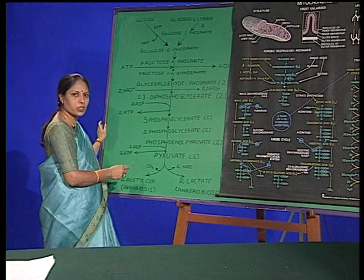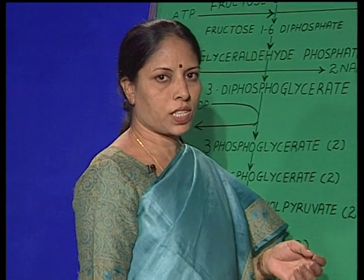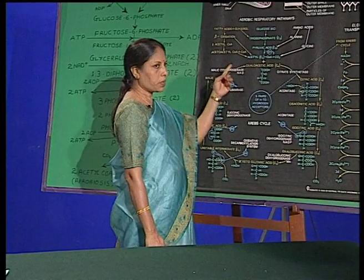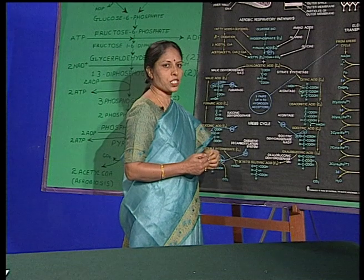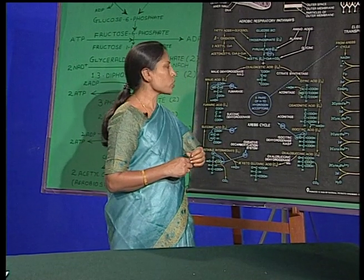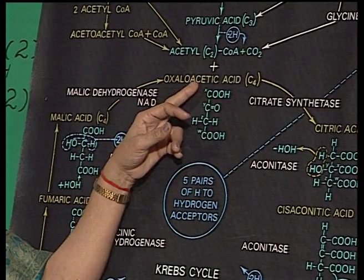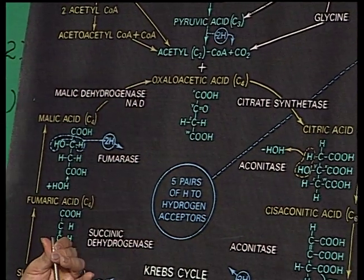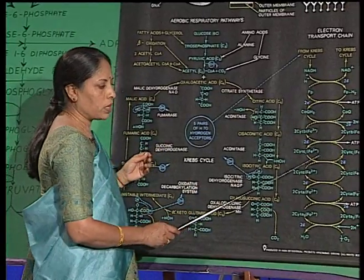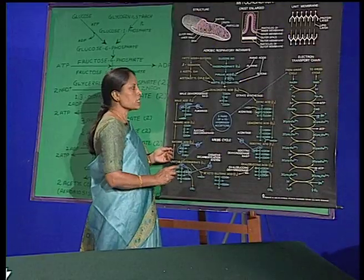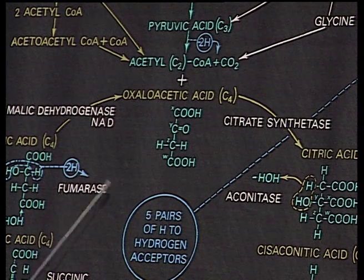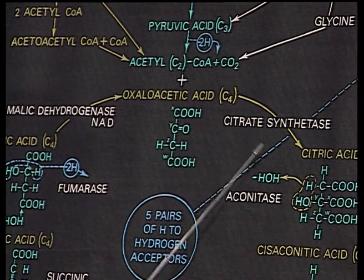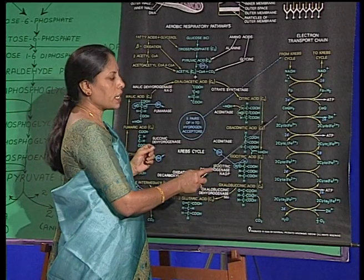In oxidative decarboxylation, the pyruvate acid, which is the end product of glycolysis, enters into the Krebs cycle. Here it undergoes oxidative decarboxylation — the removal of the carboxyl group — producing two molecules of acetyl coenzyme A and four molecules of hydrogen, which are accepted by NADH and pass through the electron transport system (ETS), ultimately liberating ATP molecules. Oxidative phosphorylation includes the oxidation of acetyl-CoA through the Krebs cycle and the phosphorylation of ADP into ATP through the ETS, or electron transport system/respiratory chain.